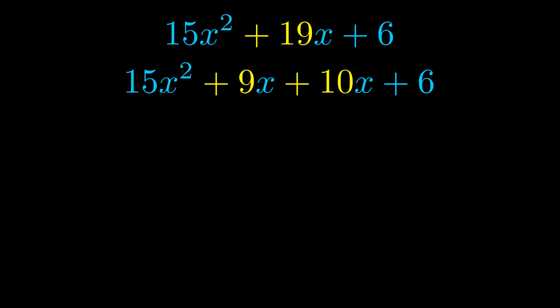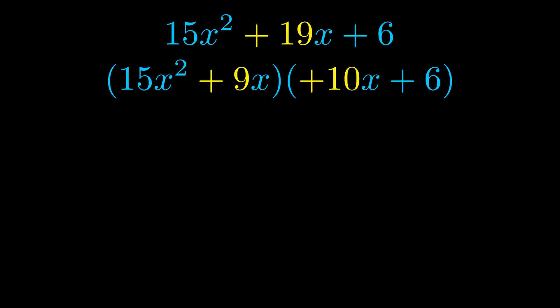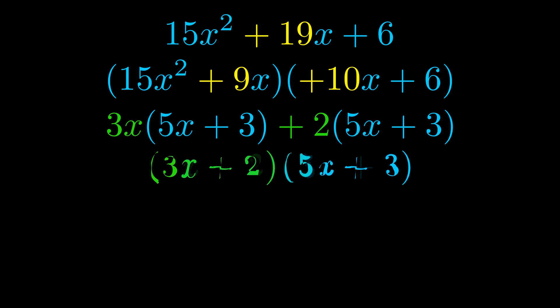Once we've done this we go ahead and put parentheses around the first term and the last term. And we do that so that we can take the greatest common factor out of both terms. We can see the greatest common factor is now outside in green. Notice also how what remains inside of the parentheses is the same in both cases. The blue values are the same.